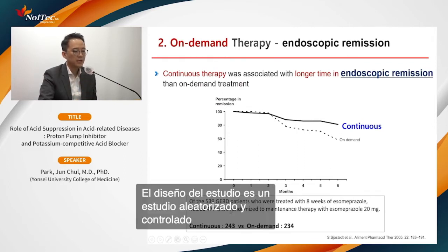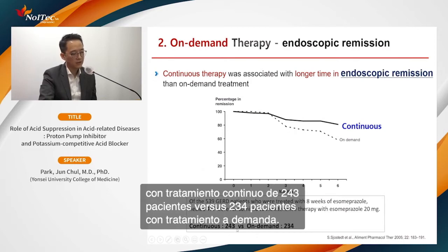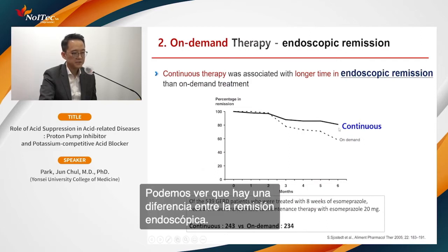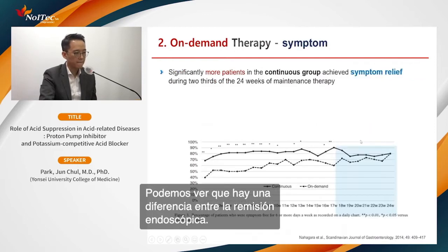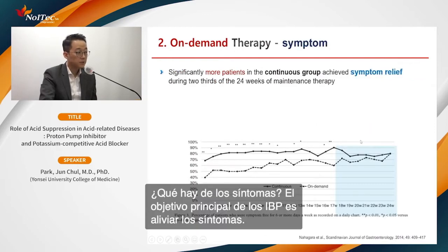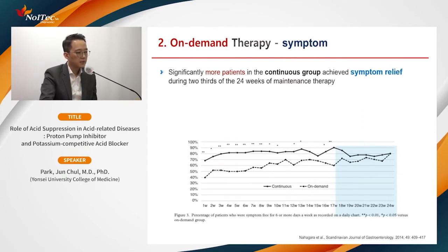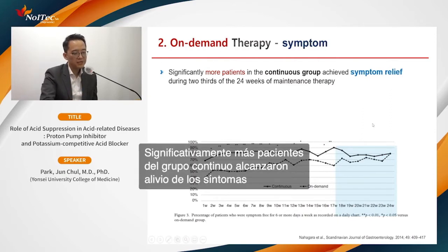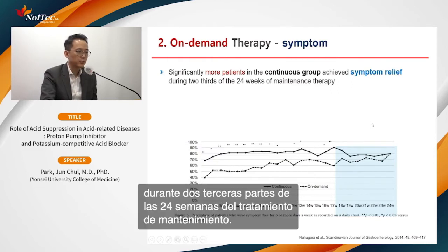For on-demand therapy, this graph shows that endoscopic remission was maintained longer with continuous therapy than with on-demand therapy. This randomized controlled study compared 243 patients on continuous therapy versus 235 patients on on-demand therapy, and there is a clear difference in endoscopic remission rates.